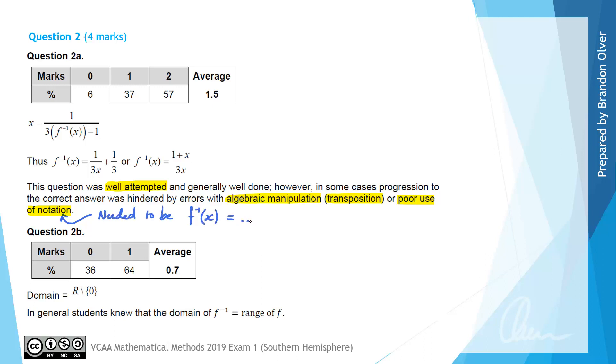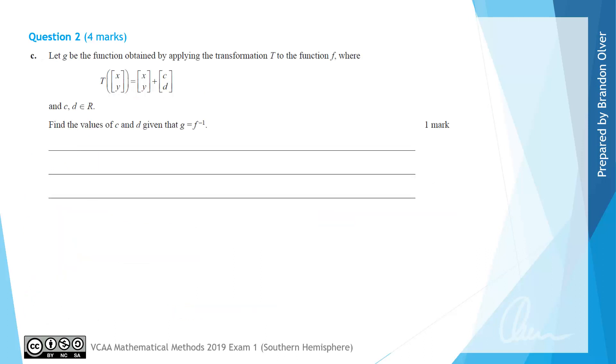For part b of the question, 64% of students got full marks and the examiner noted that in general students knew that the domain of the inverse was equal to the range of the original function.